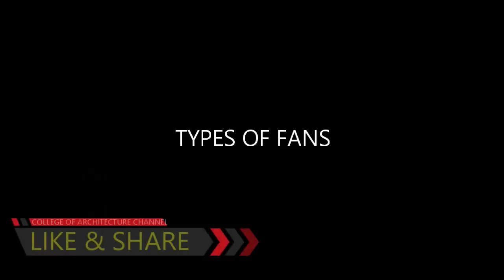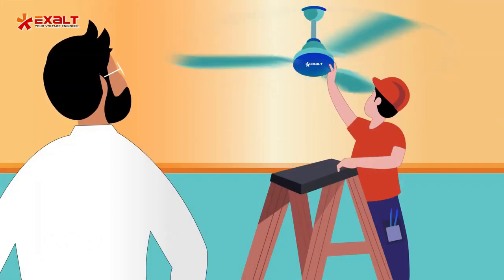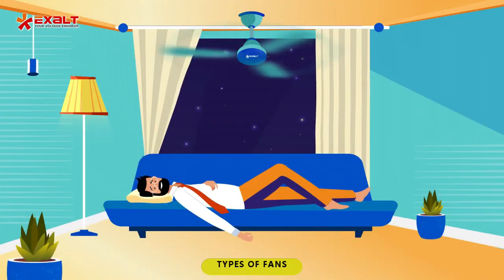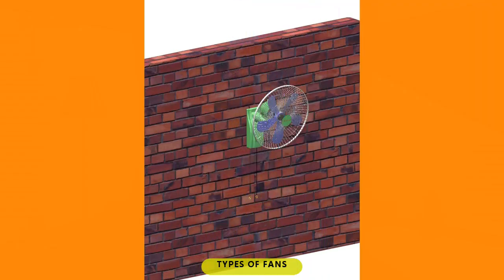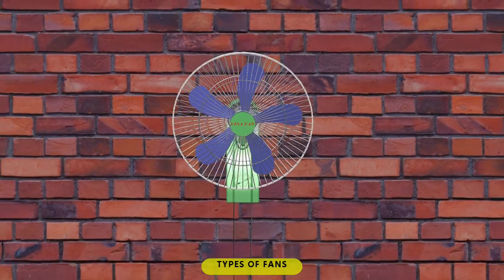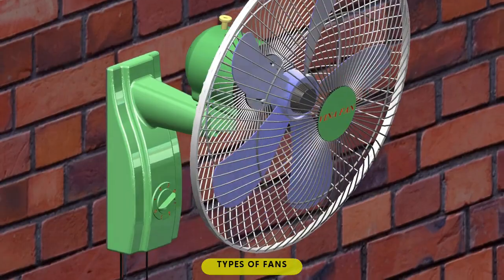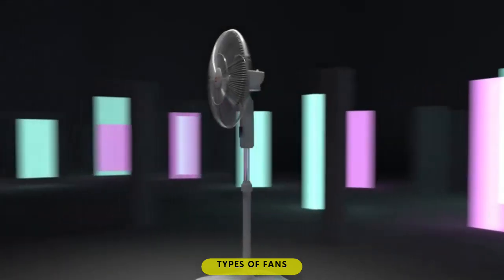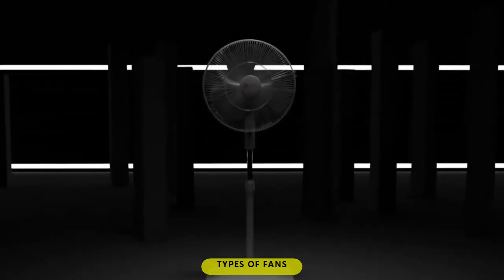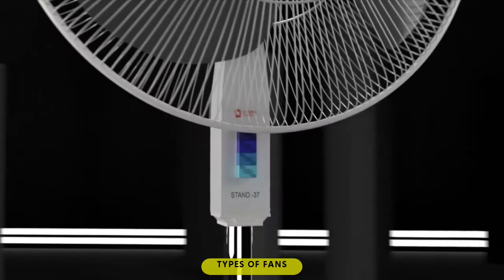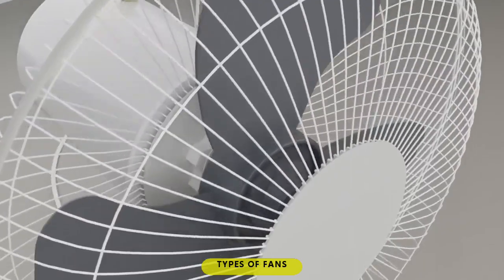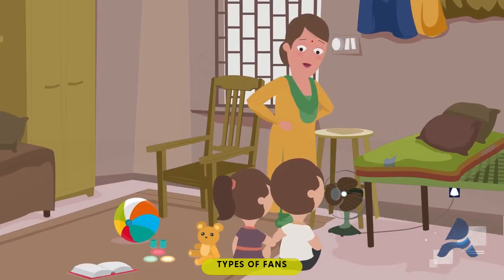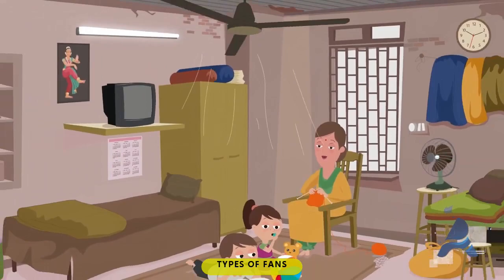Kinds of fans. 1. Ceiling fan: a fan that is attached in the ceiling soffit. 2. Wall mounted: a fan that is attached in the wall. 3. Pedestal: a fan that has a long base stand and is placed on top of a floor. 4. Desk fan: a fan that has a short base stand and could be placed on top of a floor or a table.